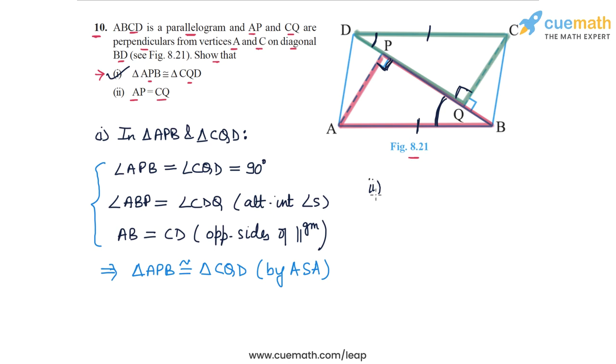For part two, where we have to show that AP and CQ are equal, we know that AP and CQ are basically just the corresponding sides of these two congruent triangles. So we can directly claim their equality.